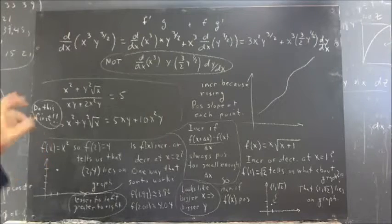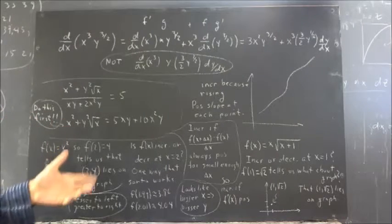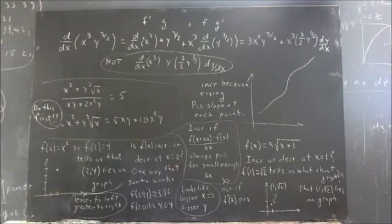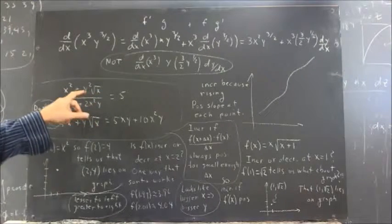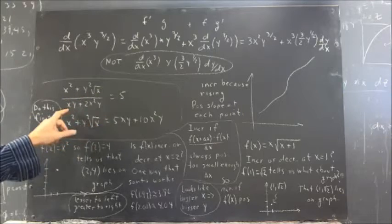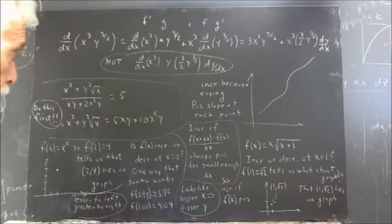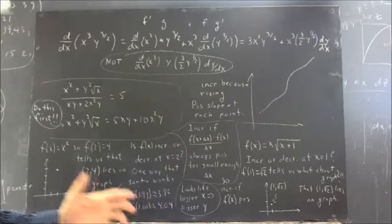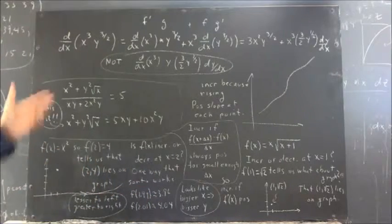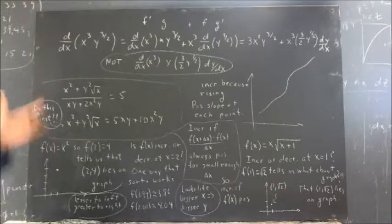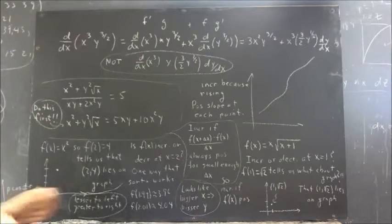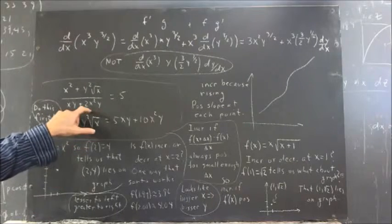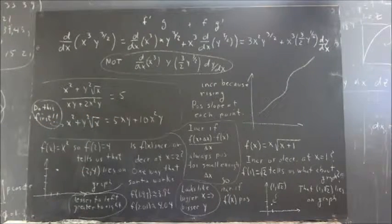It gets kind of messy, but it can be done if you keep your wits about you and realize that you have a quotient function, this function over this function, and that each of these functions involves at least one, or in this case, two product functions. So it gets a little bit complicated. If you're very careful and follow the rules very carefully and very explicitly, it can work out. But it's a lot more work than if you follow my more or less universal advice and multiply both sides by a common denominator.